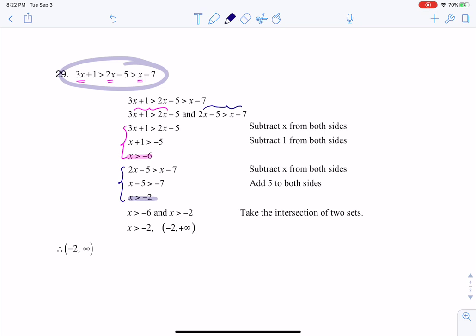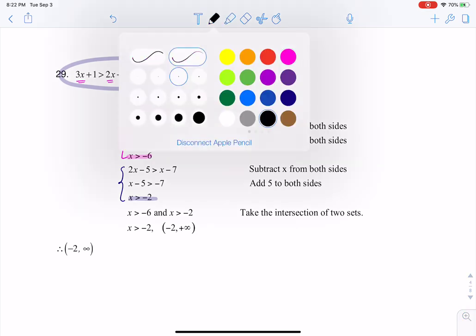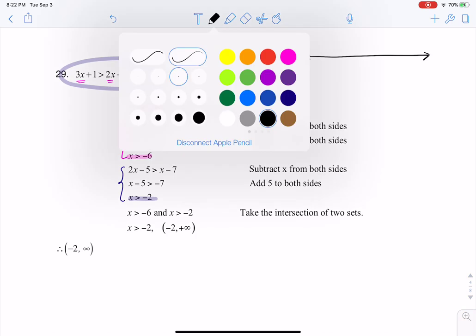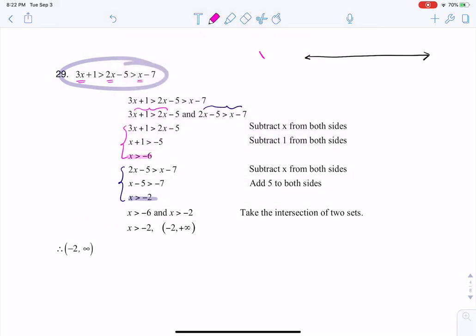So if we were to draw some number lines here, let me do this. If I take a look at the first one, where x was greater than negative six, if I go to the number line, I've got negative six here, and I want to shade to the right because that's talking about everything greater than negative six.